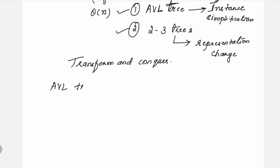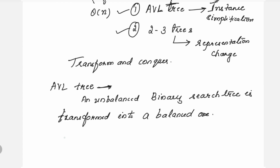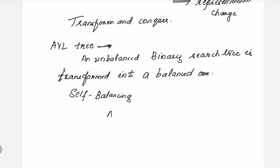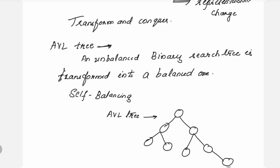In the AVL tree approach, an unbalanced binary search tree is transformed into a balanced one. These trees are called self-balancing. An AVL tree ensures that the difference between the heights of the left and right subtrees of every node never exceeds 1. For example, if left height is 1 and right height is 1, the difference is 0 — acceptable. If left is 1 and right is 2, the difference is minus 1 — not exceeding 1. This way, the AVL tree is a self-balanced tree.